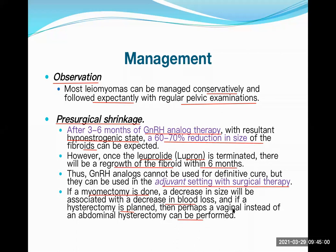In myomectomy, the uterus is not removed; only the fibroid is taken out, preserving fertility. Hysterectomy sacrifices the whole uterus along with the tumor. In both cases, decreasing the fibroid size beforehand reduces complication risk. For abdominal hysterectomy an abdominal incision is made to open the cavity; for vaginal hysterectomy the uterus is removed through the vaginal route — only possible if the fibroid size has been sufficiently reduced.